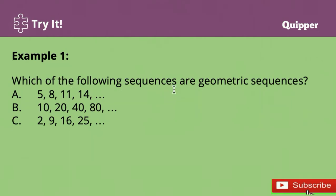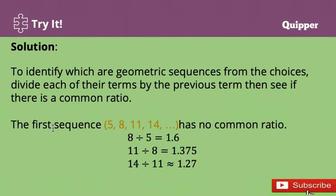Which of the following sequences are geometric sequences — is it A, B, or C? To identify which are geometric sequences from the choices, we will divide each of their terms by the previous term, then see if there is a common ratio. The first sequence, 5, 8, 11, 14, and so on, has no common ratio because 8 divided by 5 is equal to 1.6, 11 divided by 8 is 1.375, and 14 divided by 11 is approximately 1.273. Therefore, this is not a geometric sequence.